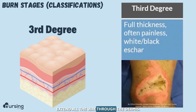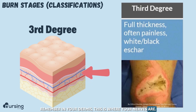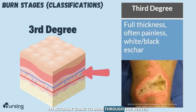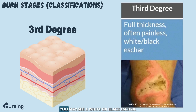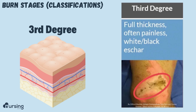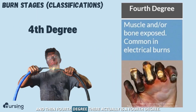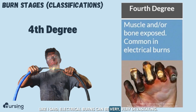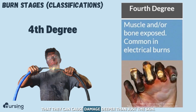A third degree burn extends all the way through the dermis — through the epidermis, dermis, and into the subcutaneous tissue. Because the nerves and blood vessels are in the dermis, burning all the way through those layers actually burns through the nerves, so third degree burns are often painless despite being very severe. You may see white or black eschar that looks leathery and thick — this whitish, light pink area is a third degree burn representing dead tissue. There actually is a fourth degree burn as well, where muscle or bone is involved; this is really common in electrical burns, which can be very devastating.